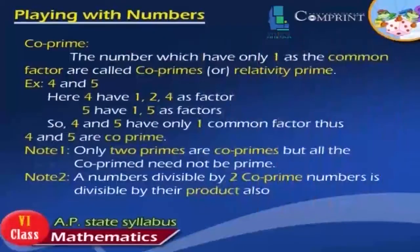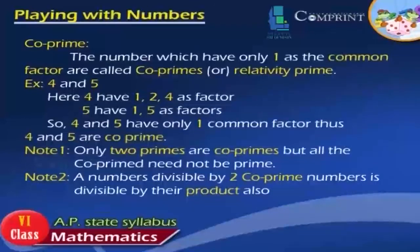Coprime: Numbers that have only 1 as their common factor are called coprime or relatively prime. Example: 4 and 5 — factors of 4 are 1, 2, 4; factors of 5 are 1, 5. They share only the common factor 1, so 4 and 5 are coprime. Note 1: Only 2 primes are coprimes, but all coprimes need not be prime. Note 2: A number divisible by 2 coprime numbers is also divisible by their product.